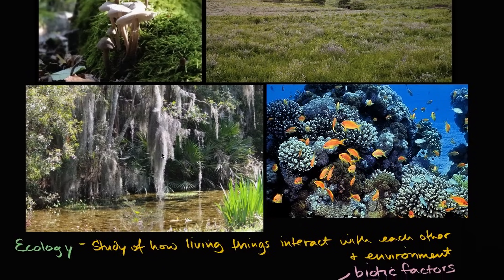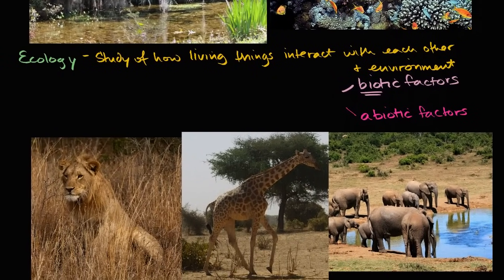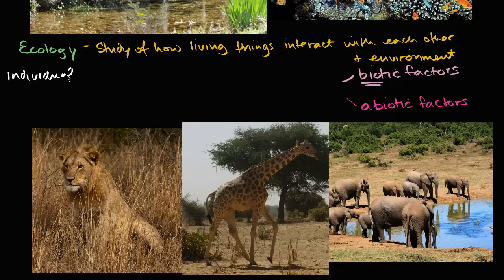When folks talk about ecology, they like to talk about different scales. So let's think about the different scales within an ecosystem, or even beyond an ecosystem. I have some pictures like those you'd see on a wildlife show. At the most basic scale is the individual. If we were talking about these elephants, the individual would be one individual elephant.